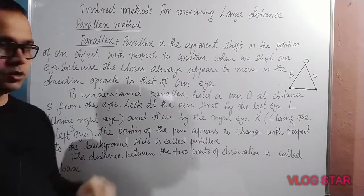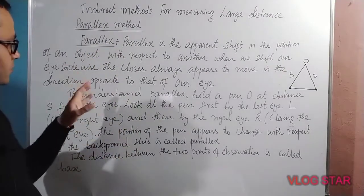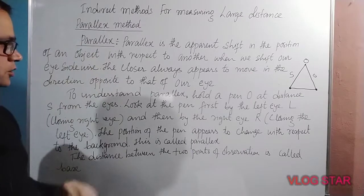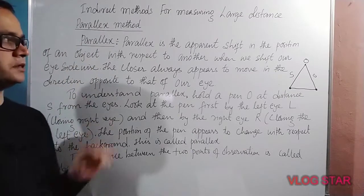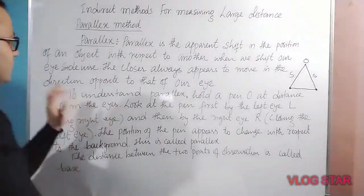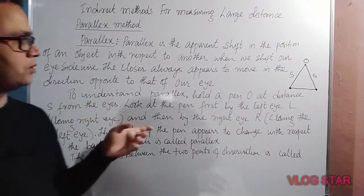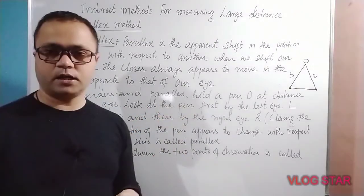In the parallax method, first we must know about parallax. Parallax is the apparent shift in the position of an object with respect to another when we shift our eye sideways.